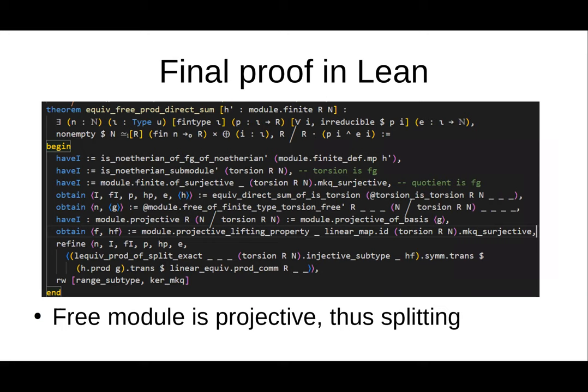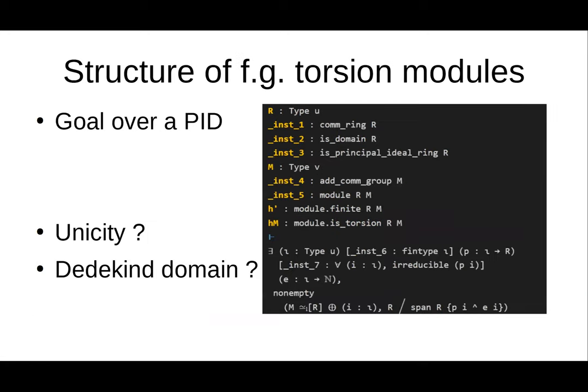Now to prove the case of torsion modules: we have a new goal — a finitely generated torsion module M — and we want to show it's isomorphic to a direct sum of quotients.